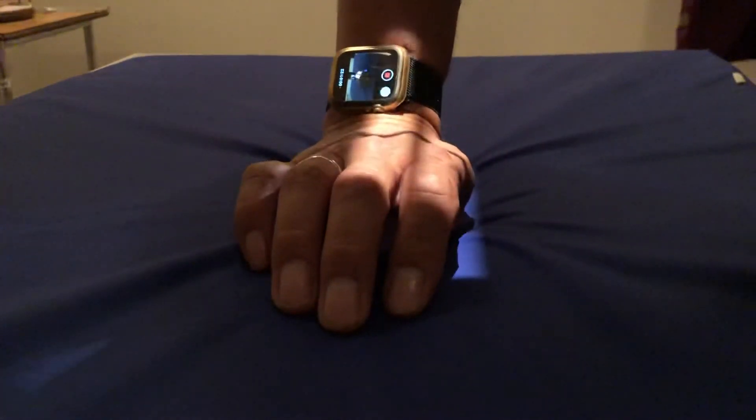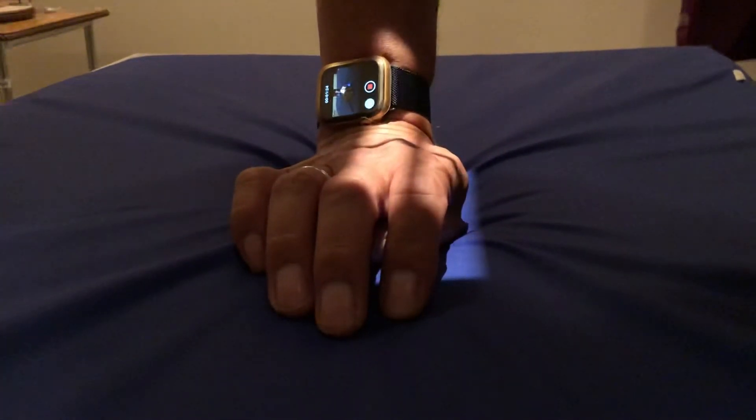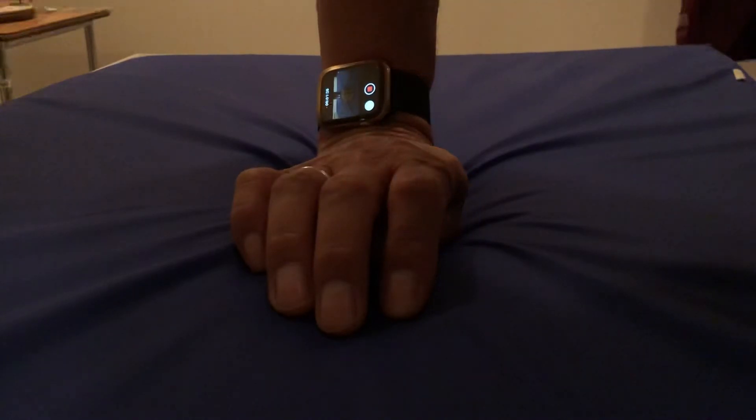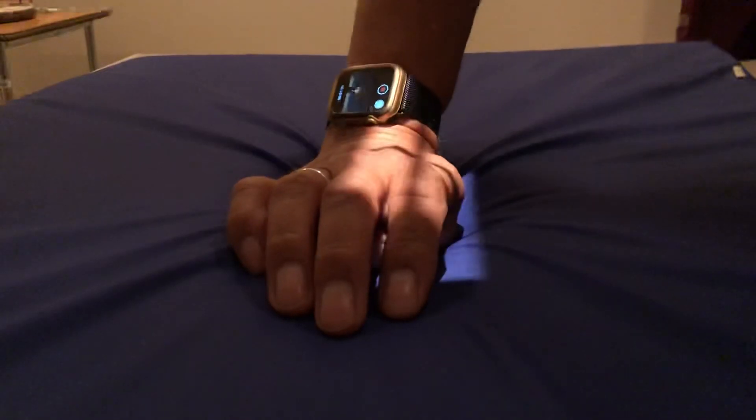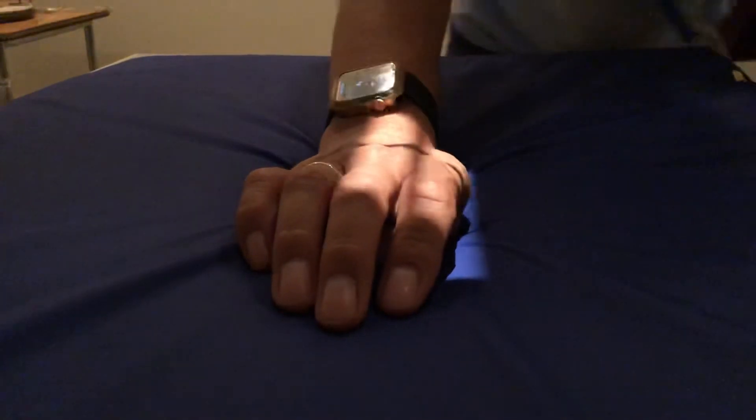And the very last one is going to be the opposite oblique, and the opposite oblique is exactly the same as the first oblique, except instead of having your hand face down, you're going to have it face up or palm up. And so it'll go like this.